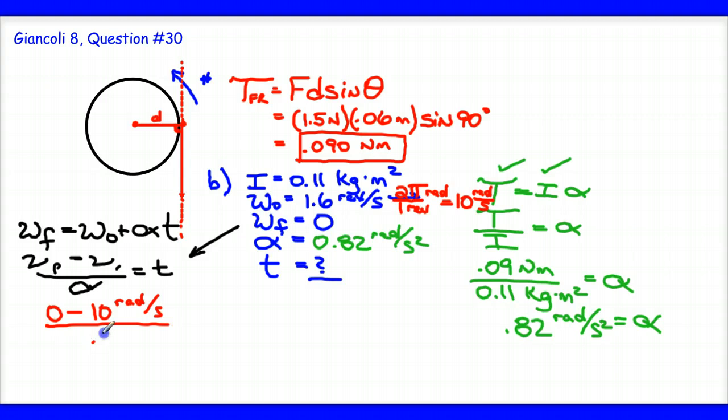Let me explain. If I put in my 0.82 radians per second squared that I have solved for previously, I get a negative over a positive, which indicates to me that